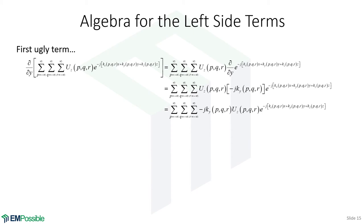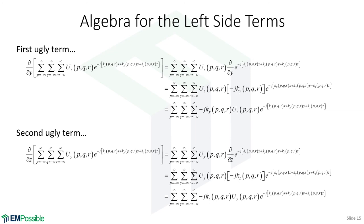For the first ugly term, we bring the y-derivative inside the summation. Since the unit vector uZ is constant with respect to y, it comes outside the derivative. Differentiating the complex exponential brings down a factor of -j·KY, giving us our simplified first term. The second ugly term is nearly identical — bringing the z-derivative inside similarly brings down -j·KZ. So the first term yields -j·KY and the second yields -j·KZ.